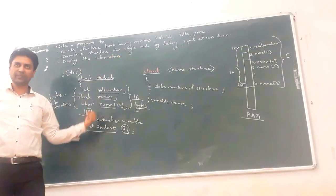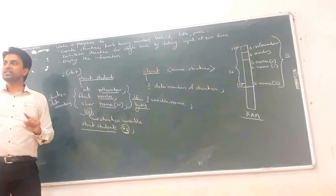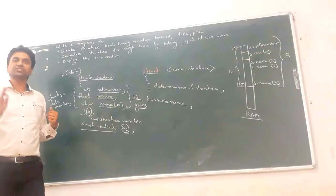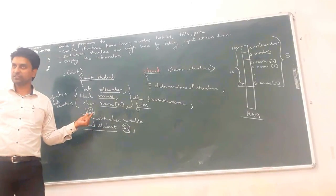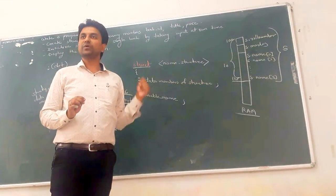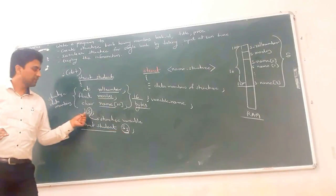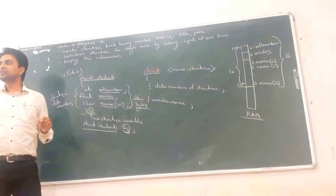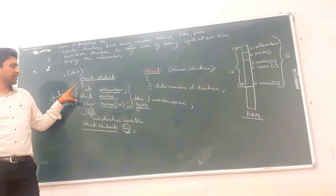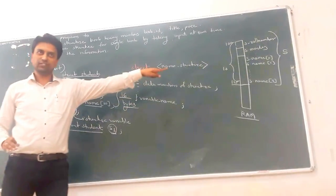How many bytes are reserved for the structure variable? Note that for individual data members — roll number, marks, and name — no separate memory is allocated, because these are structure data members, not structure variables. Memory is reserved only for structure variables. The compiler reserves memory on the RAM only for S and S1. Here, a 16-byte block is reserved for S, and similarly 16 bytes for S1.